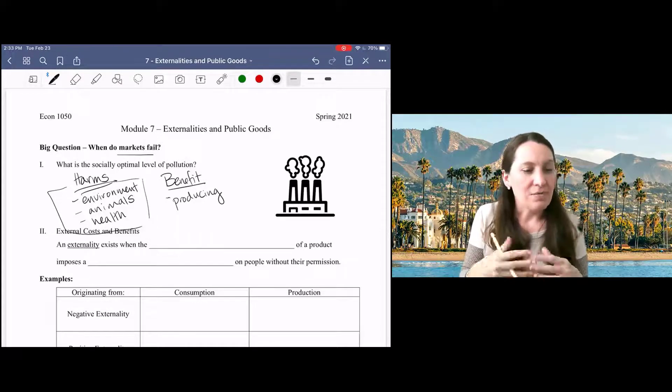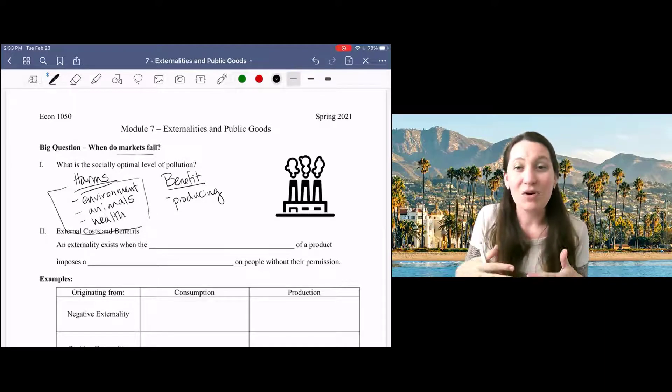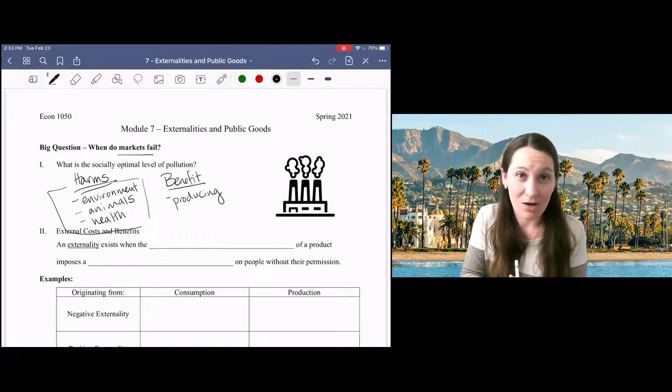So when we have this cost external to our market decisions, the market fails to take into account that cost and therefore we end up with too much pollution.